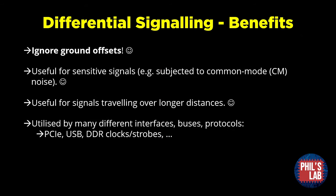To sum this up, the key benefit of differential signalling is that we can ignore ground offsets — and this is pretty much the only reason for using them on PCBs. Differential signalling is useful for sensitive signals subjected to common mode noise and for signals travelling over long distances. We see differential signals used by many interfaces such as PCI Express, USB, DDR, clocks, and strobes.